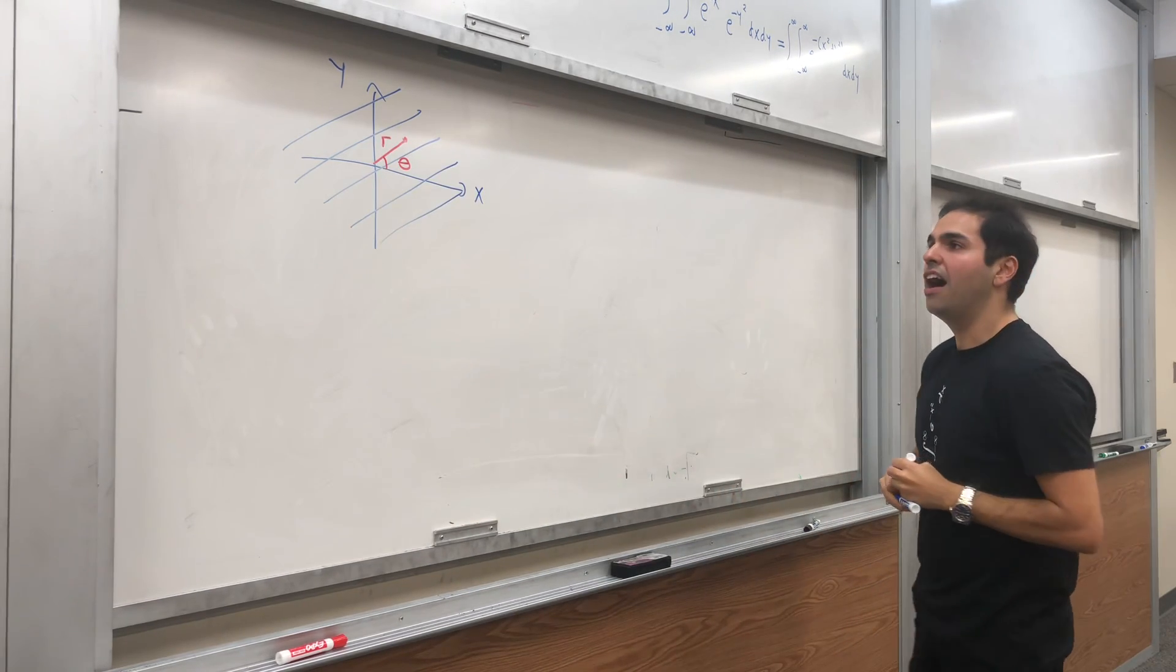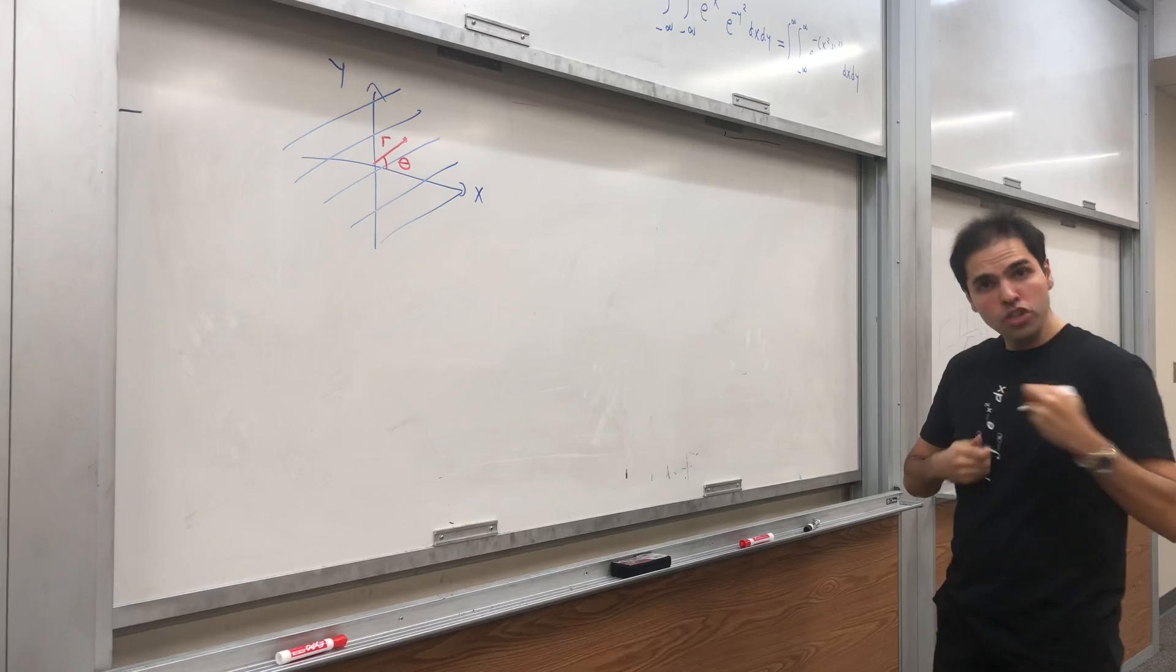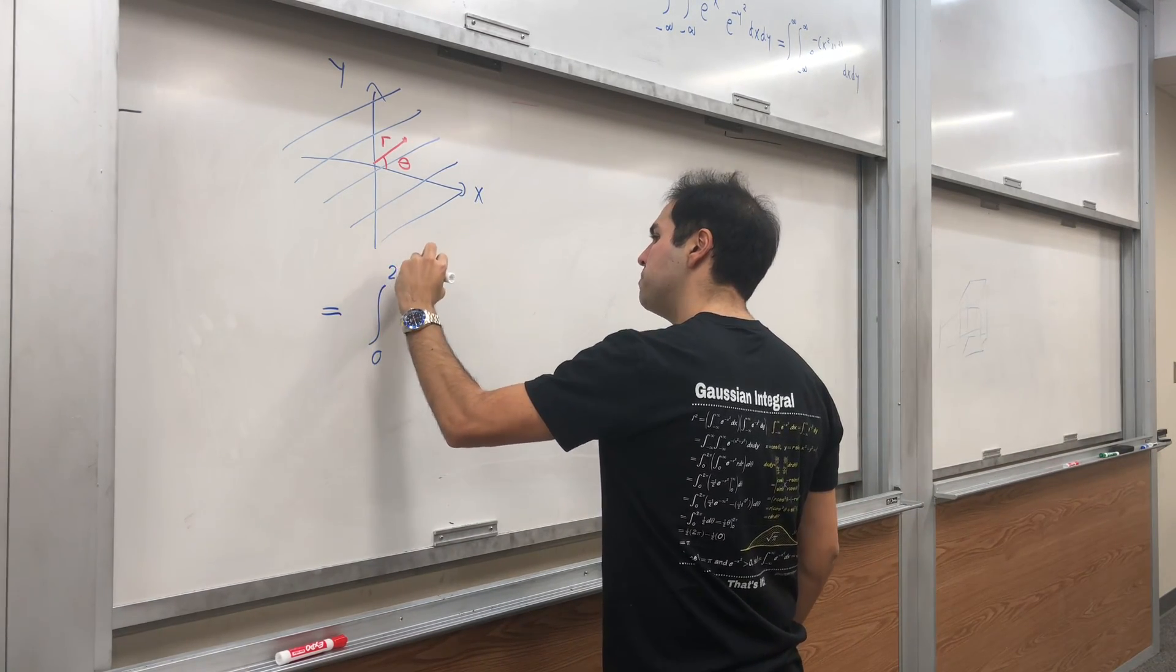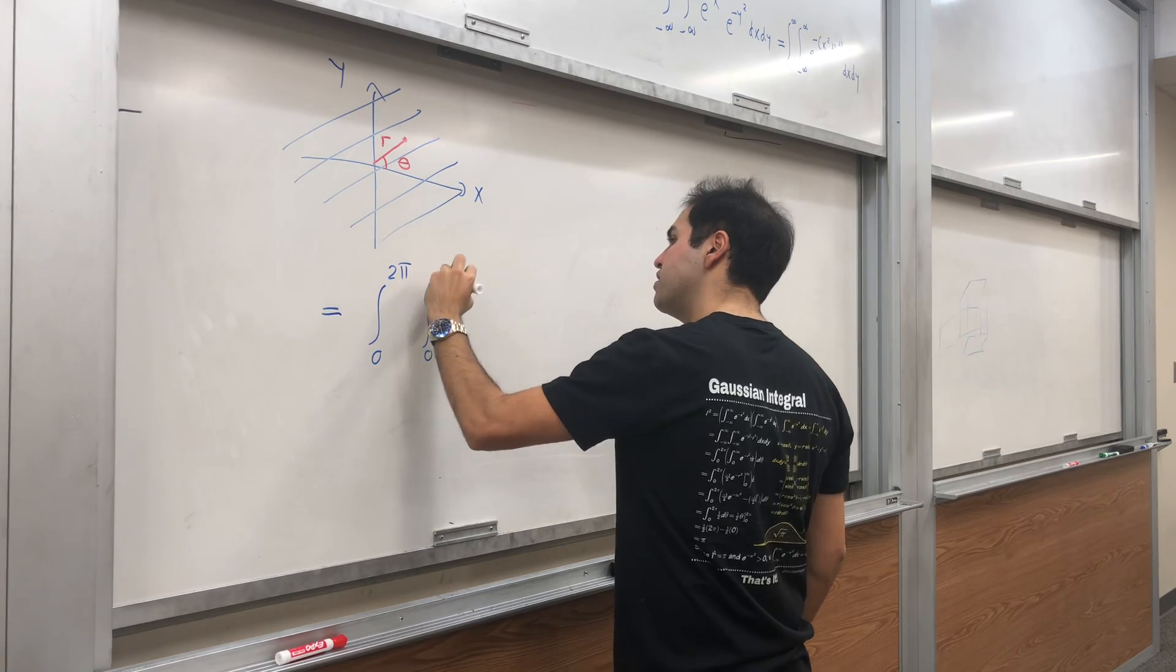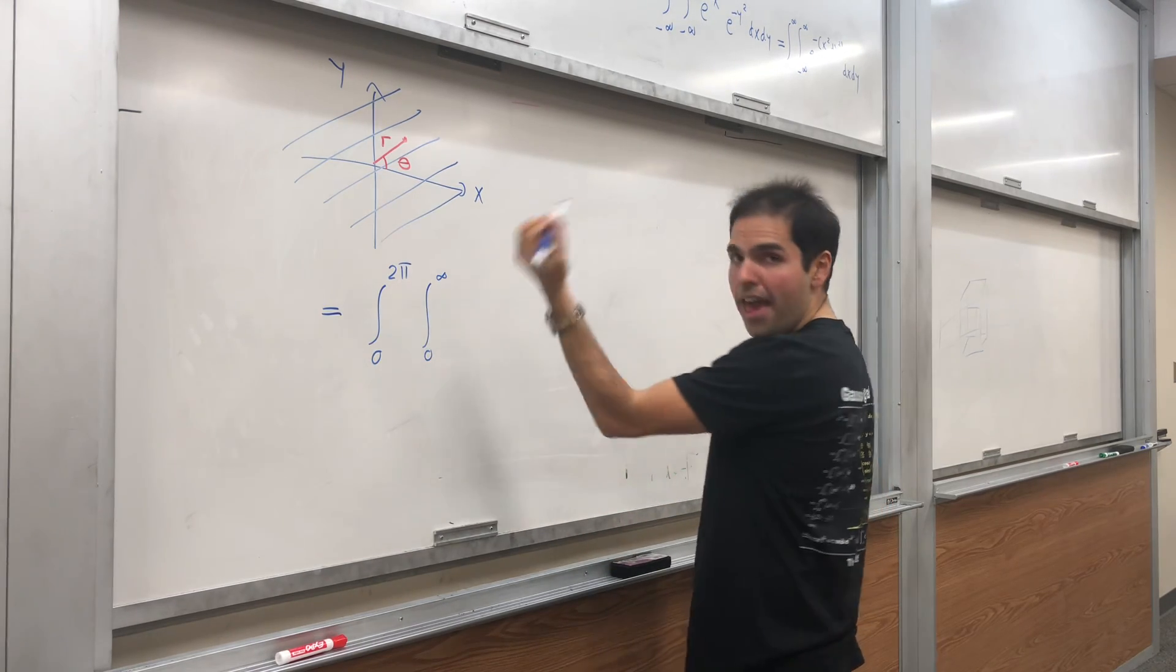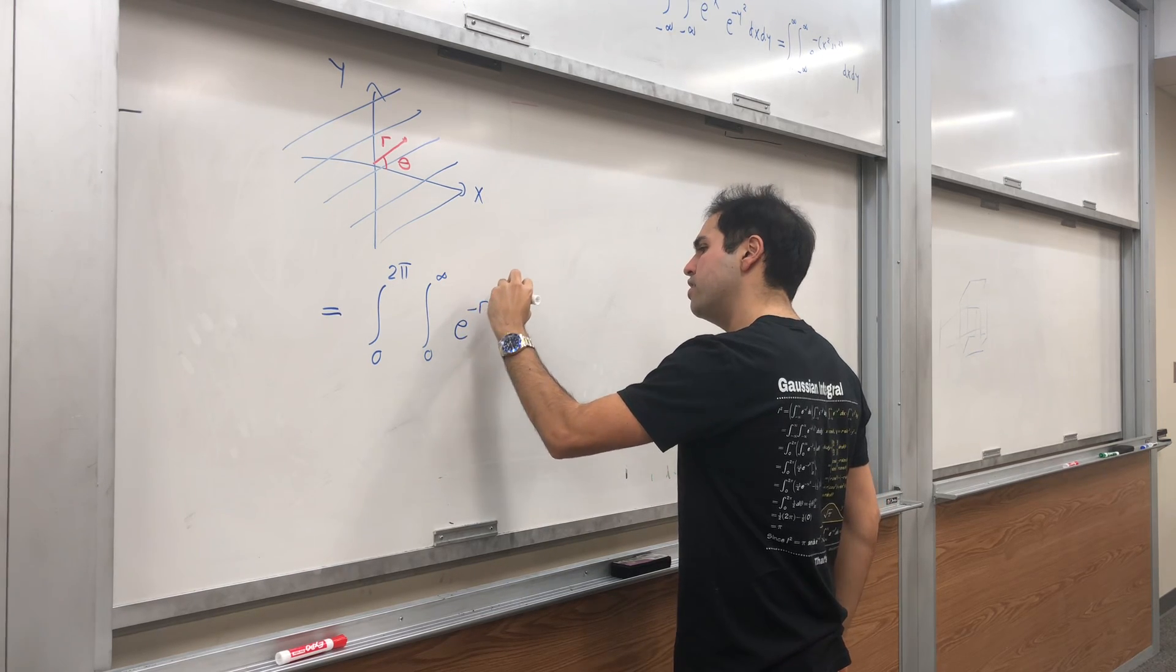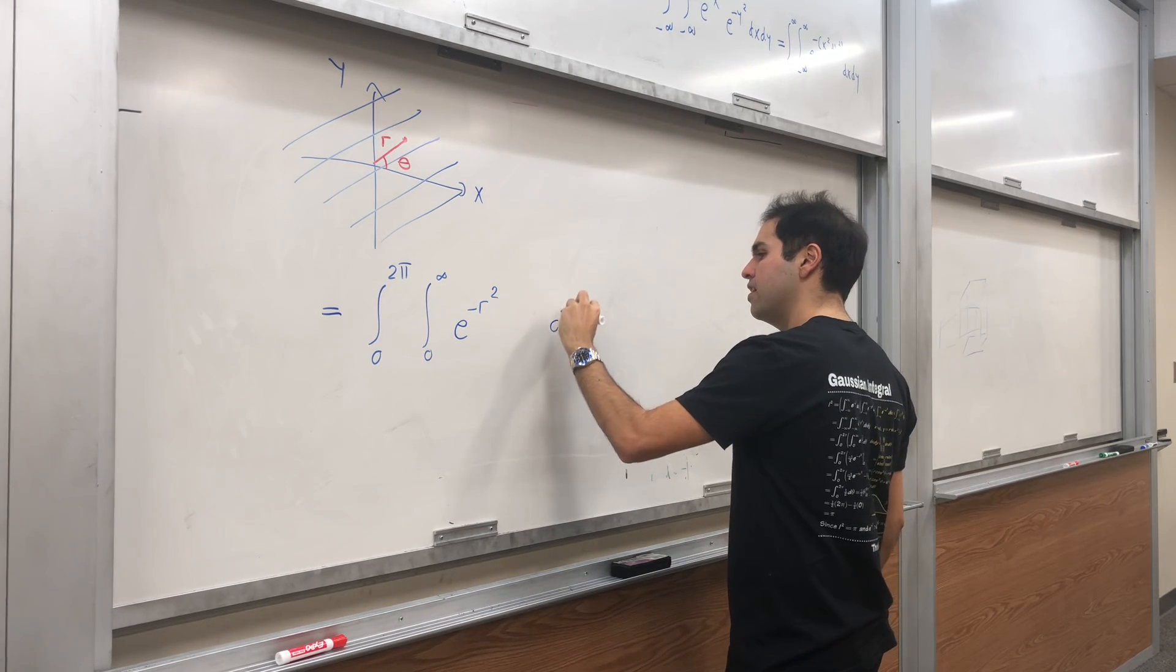So our new bounds of integration will be integral from zero to 2π, integral from zero to infinity. x² + y² becomes r², so e^(-r²) dr dθ.